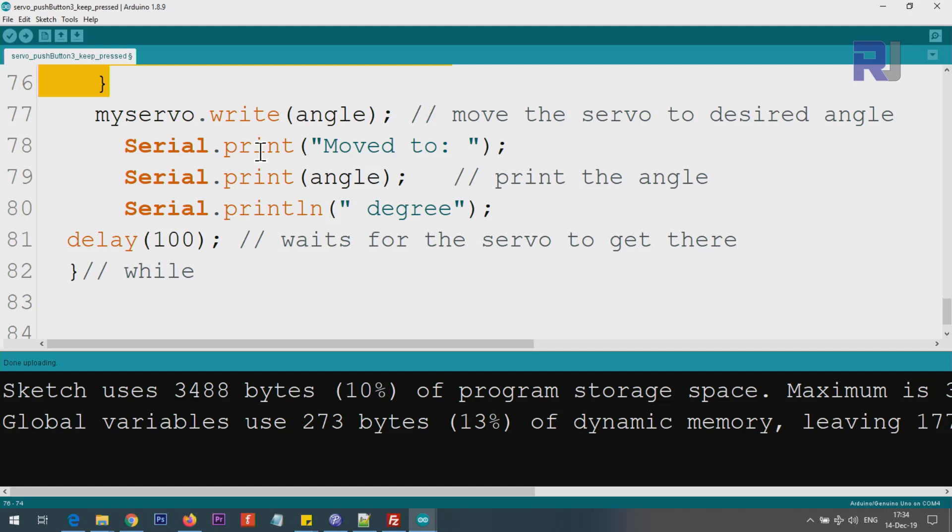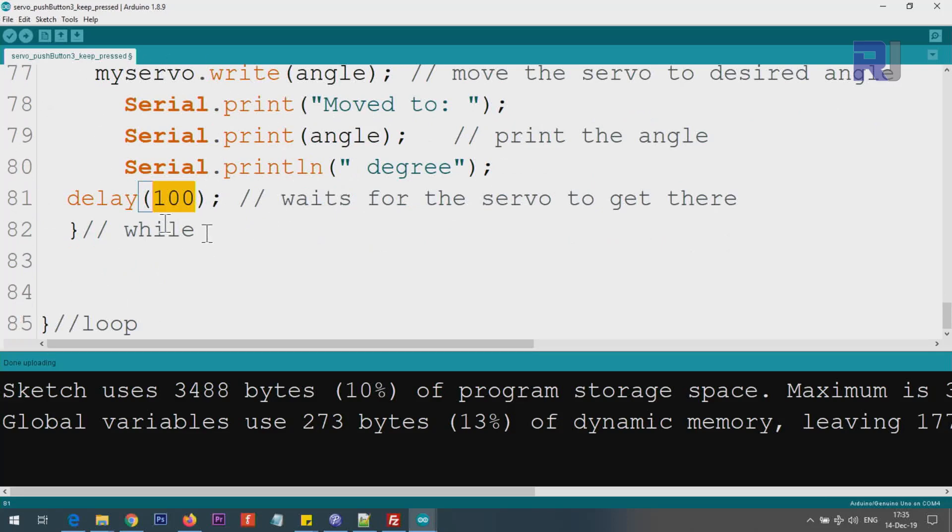Then we use Serial.print("Moved to")—this is a text, you see the double quote—and this is the actual angle that we have will be printed here, and with a space we print the word "degree." You see print, print, and this has ln. ln means new line, so these will be shown side by side and this will create new line. So this will be printed as one line. We give it 100 milliseconds for the servo to reach to the position. You can play with this if you wanted to speed it up—reduce this value. But you cannot go very low below certain value depending on your servo, because the servo will not respond and it will have no meaning if you go below certain value. Then the loop will continue, take the same action over and over again.